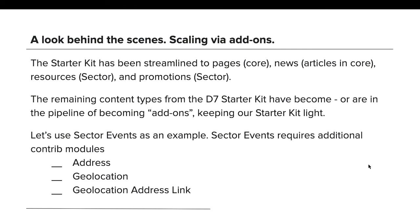The starter kit itself in Sector has been reduced to four content types: page and news — which is article in core — resources and promotions which come from Sector. The remaining content types from the D7 starter kit have become, or are in the pipeline of becoming, add-ons. This keeps our starter kit light. Sector events requires three contrib modules: Address, Geolocation, and Geolocation Address Link. In Drupal 7 those would have been three extra contribs bloating the profile. With Sector 8, when Address has a security issue, sites that don't use events simply don't need to worry. It's a win-win.